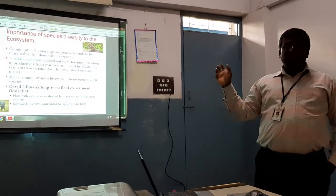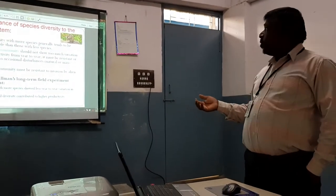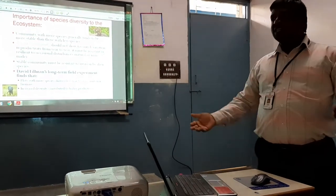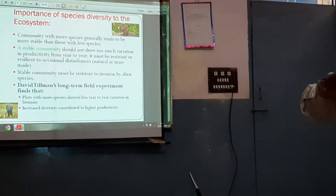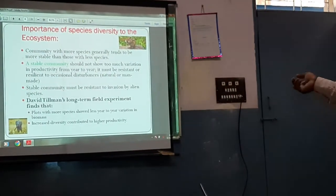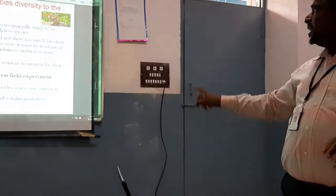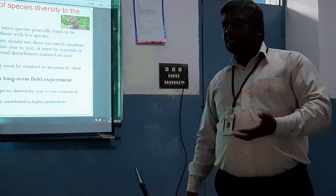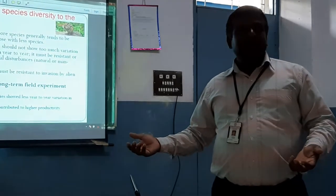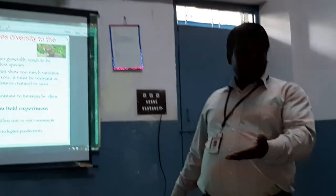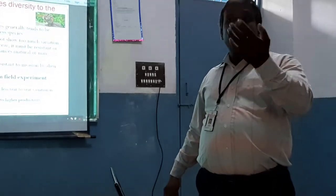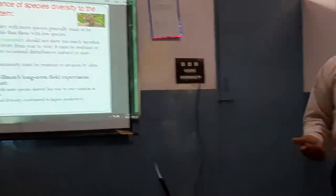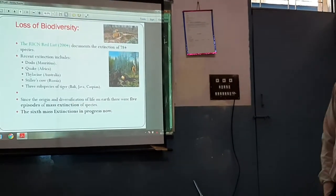David Tilman's long-term field experiment showed that more species in a community leads to less year-to-year variation. If a community has a large number of species, they show lesser variation. Increased diversity means more the number of plant and animal species, more the productivity. Productivity — net primary productivity and gross primary productivity — can be measured in terms of biomass, numbers, or energy contribution. More species diversity means more productivity, as Tilman's experiment showed.